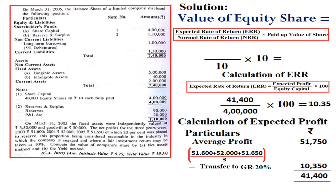Then we apply the ERR in the main formula for value of share: 10.35 divided by 10, multiplied by 10 = 10.35. So, the yield value is 10.35 as per this question.